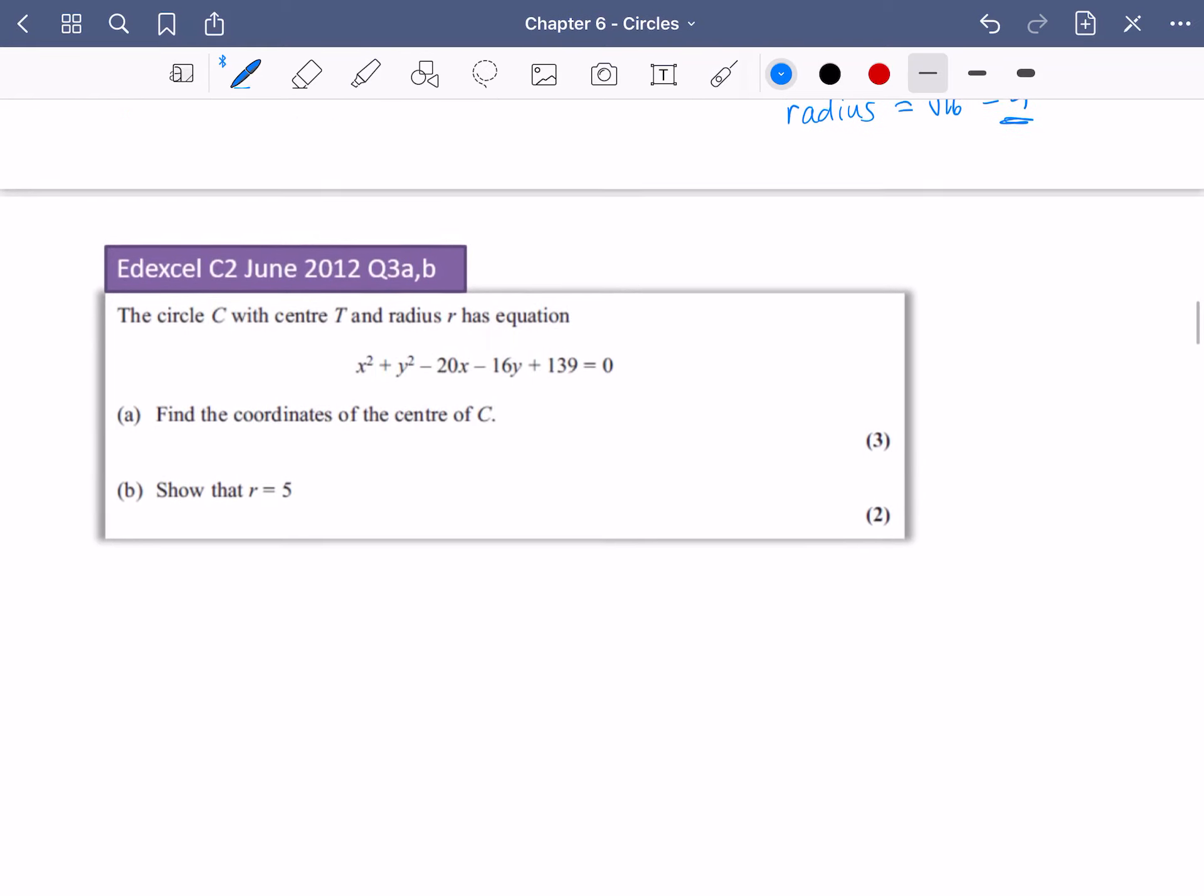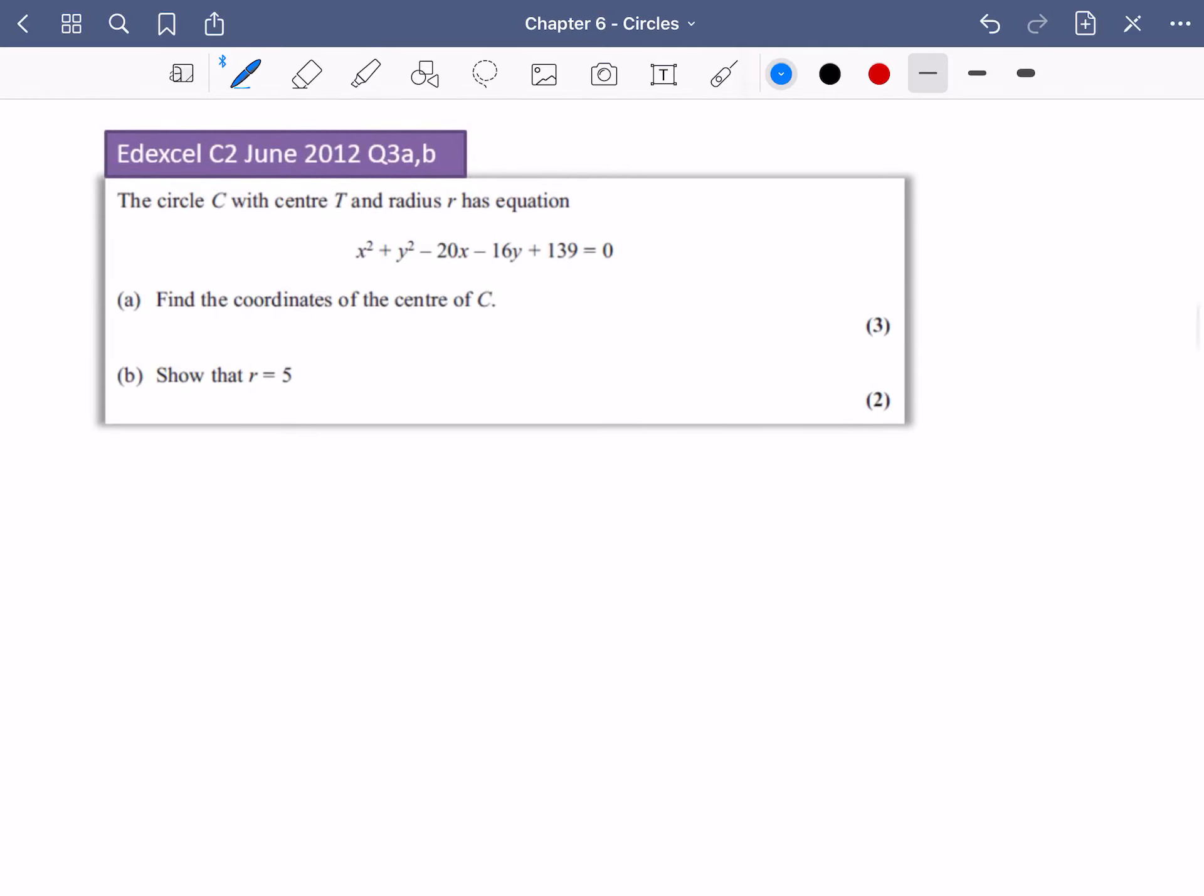So I'm going to just do one more example here. And then you're going to have a go at doing one yourself. And again, it's just going to be some practice of seeing completing the square. So this is quite nice to sort of tie this into some of that previous topic. And you'll see also now why completing the square was so important. So the circle with center T and radius r has this equation, find the coordinates of the center and show that the radius is equal to 5. So I'm going to rearrange it to begin with.